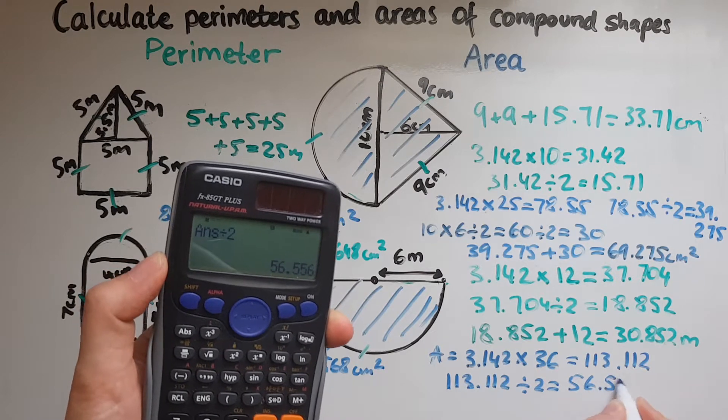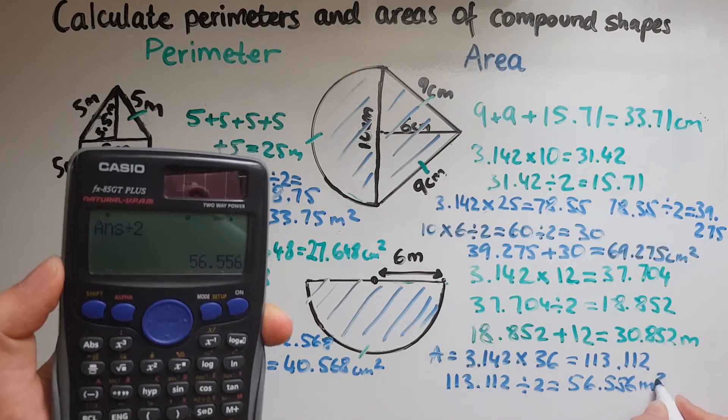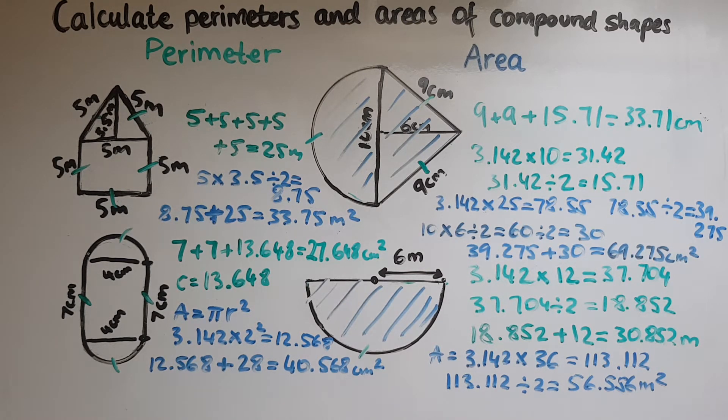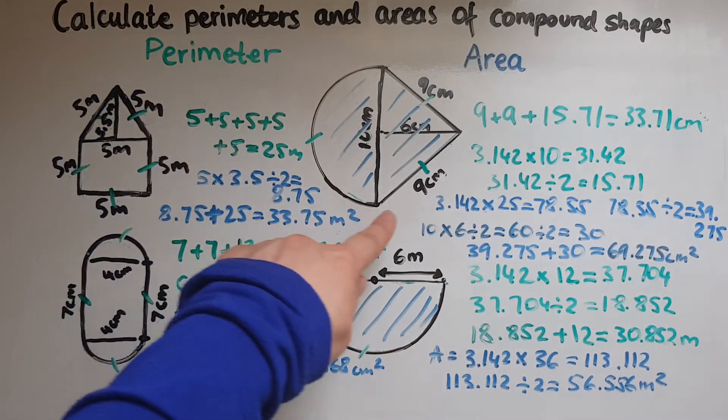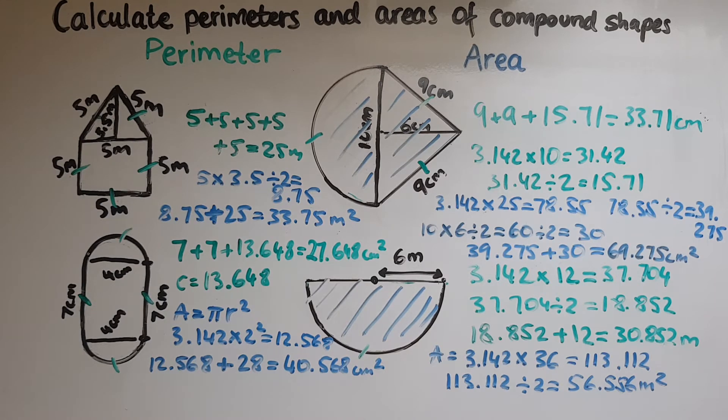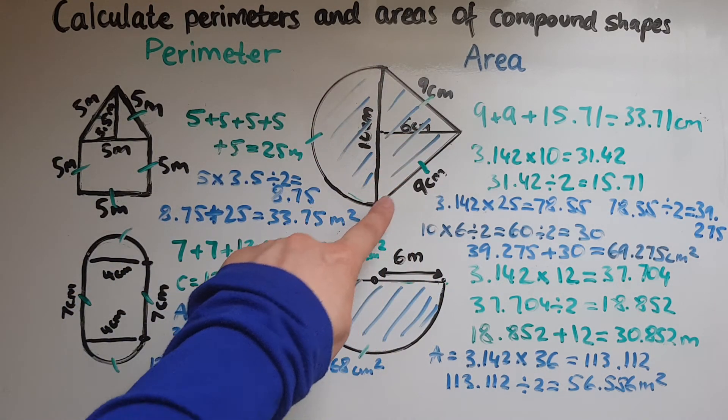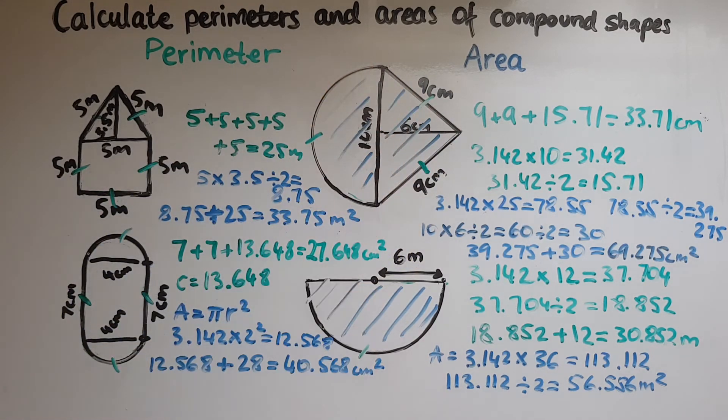That equals fifty six point five five six meters squared. To summarize, when we looked at the perimeter it was a case of just going around the shape, adding the sides. When it was a circle we'd look at the circumference, and a triangle we're looking at the sides that are outside, not the one inside. Whereas when it came to area, all we did was look at and work out the area of the simple shapes that made the compound shape.